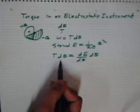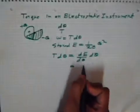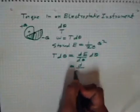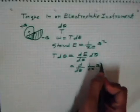So if I just put the values, I'll have d/dθ of half, one by C, Q².